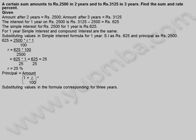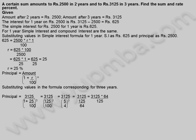Principal = Amount / (1 + r/100)^n. Substituting values for three years: Principal = 3,125 / (1 + 25/100)^3 = 3,125 / (5/4)^3 = 3,125 × 64/125 = 1,600 rupees. The principal lent at compound interest is 1,600 rupees.